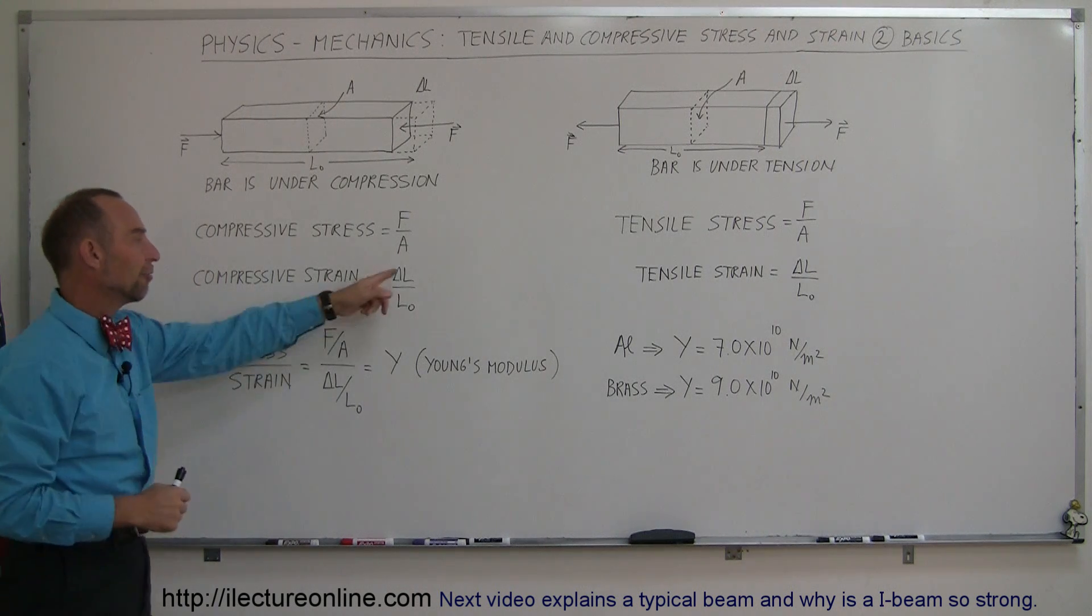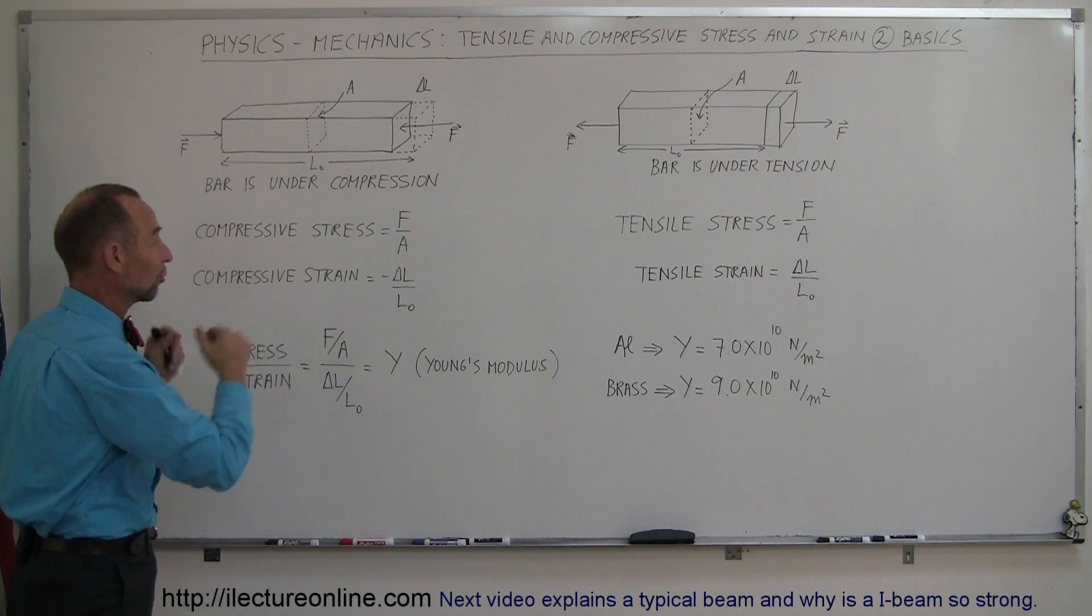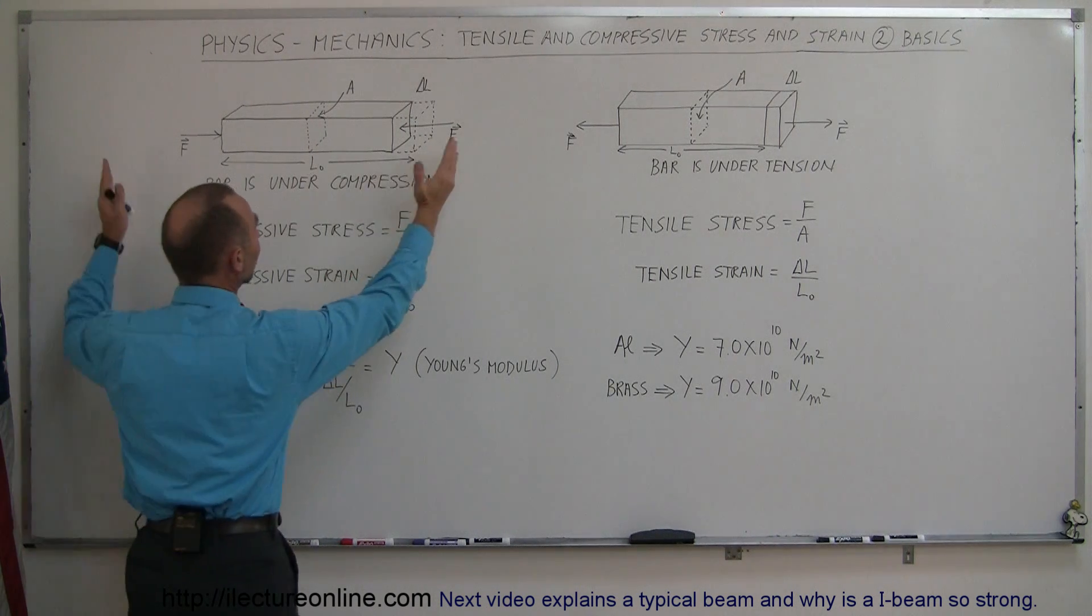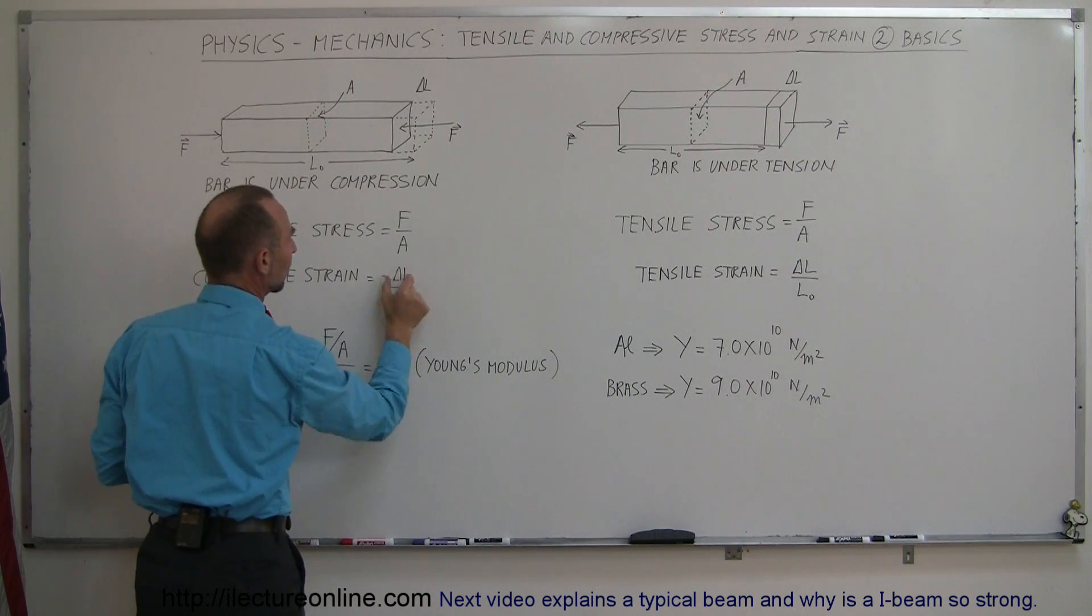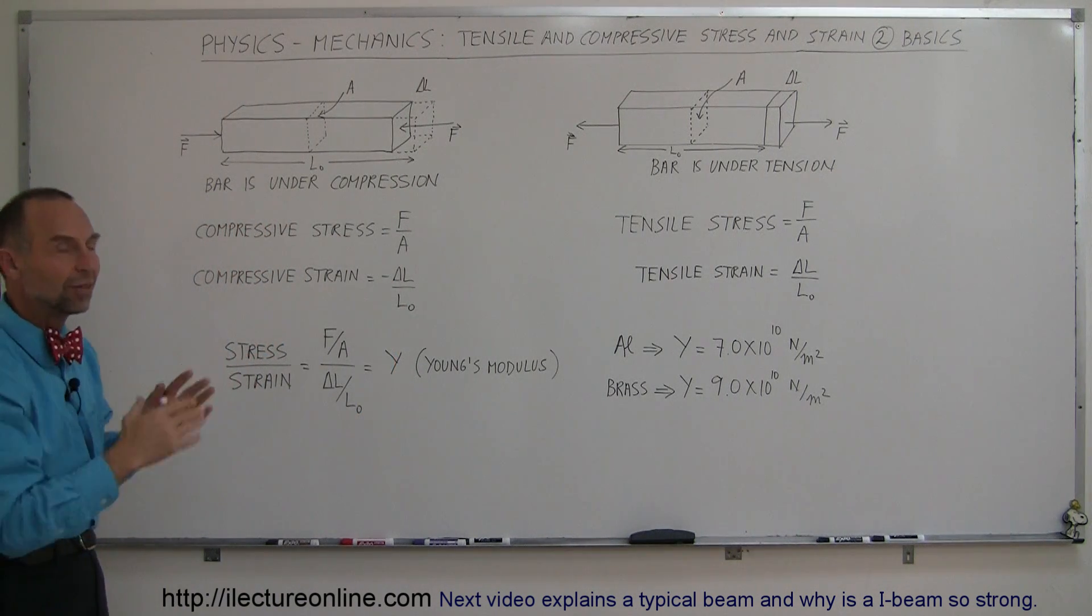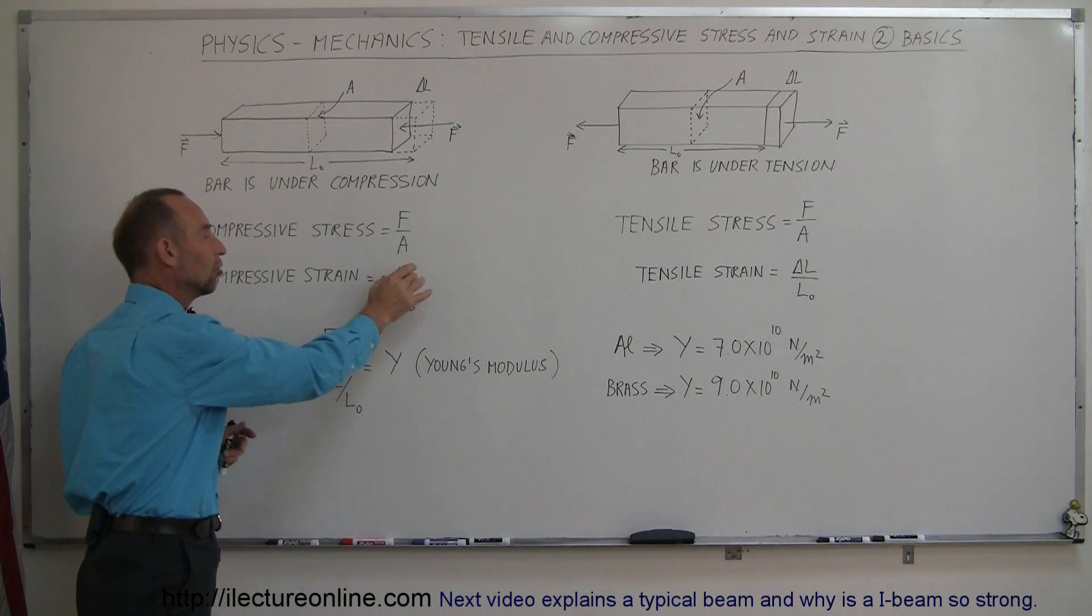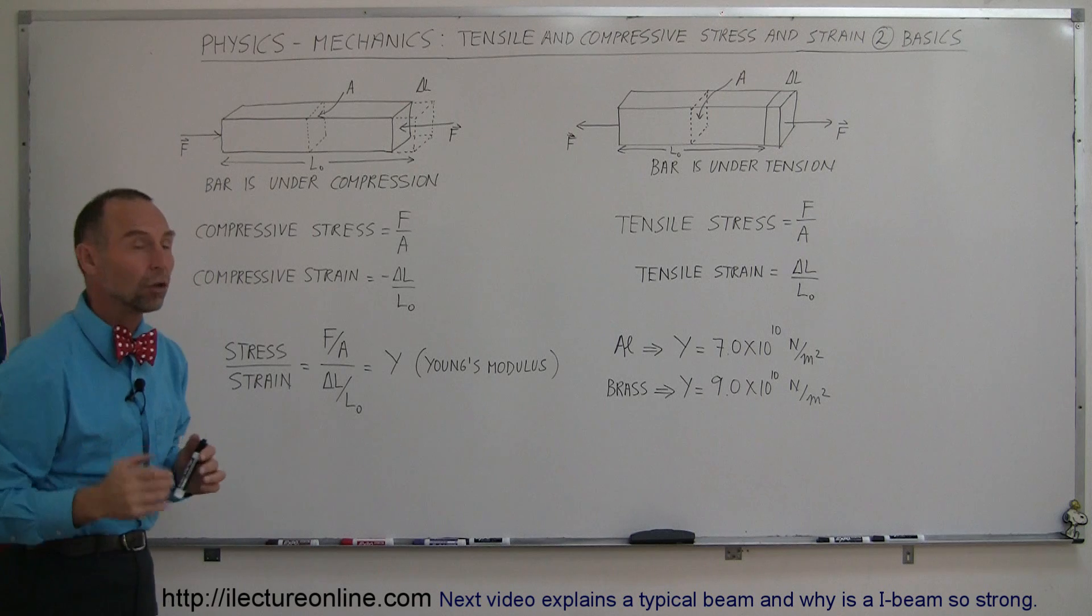The strain is the deformation divided by the original size. In this case, this will be in terms of length. By compressing the bar, we're making the bar a little bit shorter. That's the delta L. When we make it shorter, we use a negative because it's decreasing in length. The ratio of the change in length over the original length is called the strain.